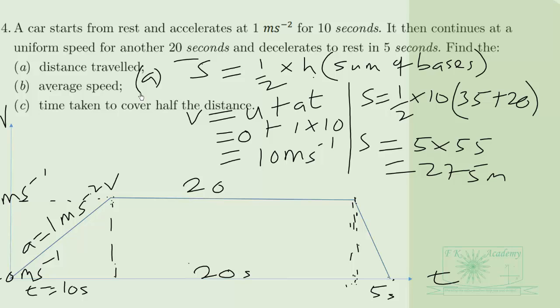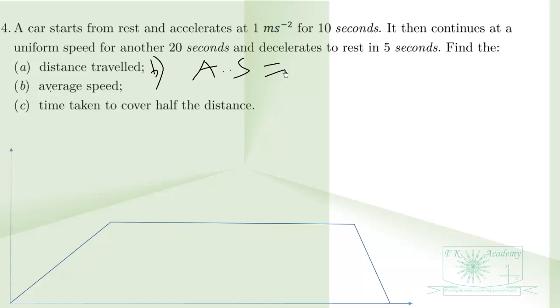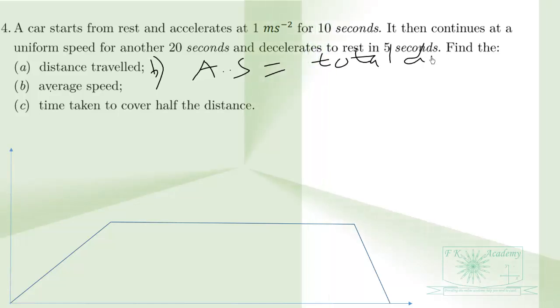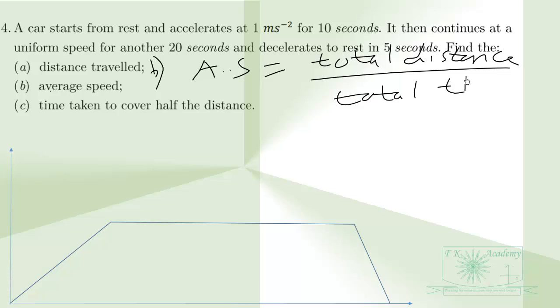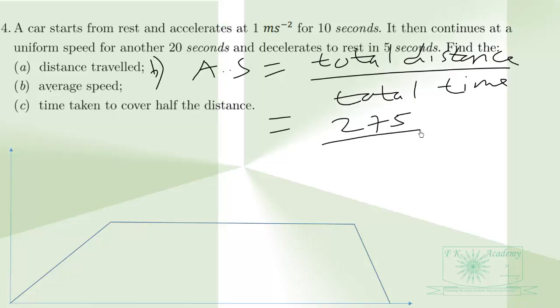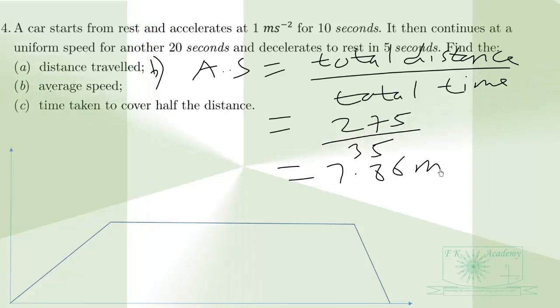For part (b), average speed is total distance traveled over total time taken. Total distance was 275 meters, and total time was 35 seconds. This gives us 7.86 meters per second.